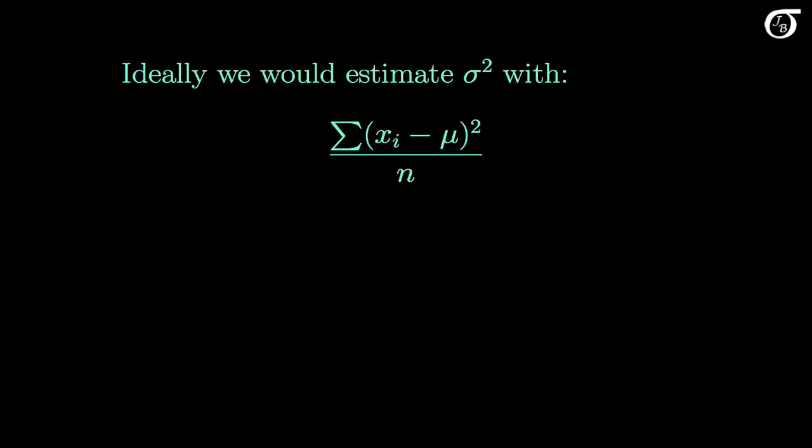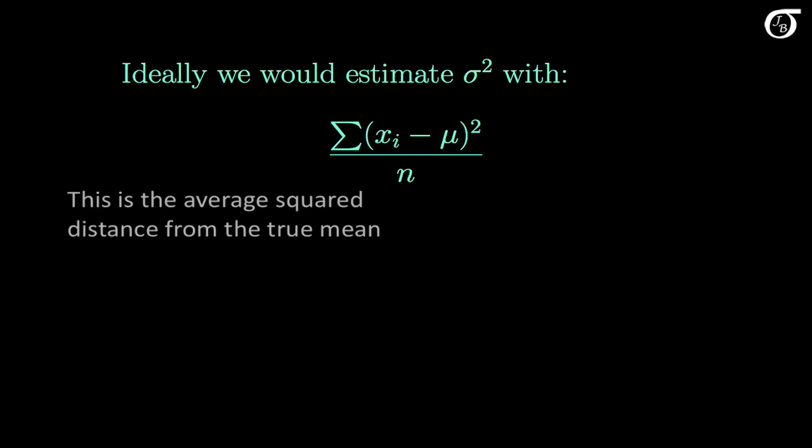Ideally we would estimate sigma squared with this quantity: the sum of x minus mu squared divided by the sample size n. This is the average squared distance from the true mean, and it would be the best estimator of sigma squared. But there is a problem — the population mean mu is usually not known, so we cannot use it in this formula.